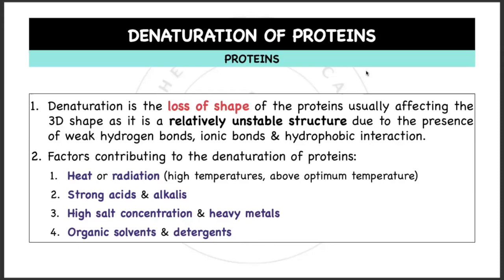Strong acids and alkalis: acids contribute to more hydrogen ions while alkalis or bases contribute to more hydroxide ions, so too high a concentration of hydrogen ions or hydroxide ions will break the ionic and hydrogen bonds of the protein molecule causing it to denature. Next is high salt concentration or heavy metals, and finally organic solvents and detergents. These organic solvents and detergents will disrupt the hydrophobic interactions due to their inability to form bonds with non-polar groups.